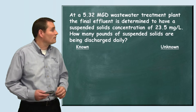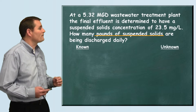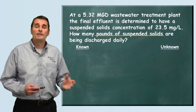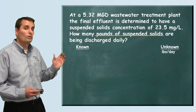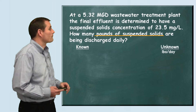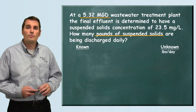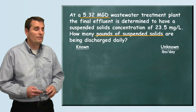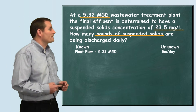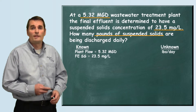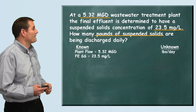Like always, we want to pull out our known and unknown information. They want us to find how many pounds of suspended solids are being discharged, so we write that down — we're looking for pounds per day. The plant flow is 5.32 million gallons per day, and our suspended solids concentration is 23.5 milligrams per liter.